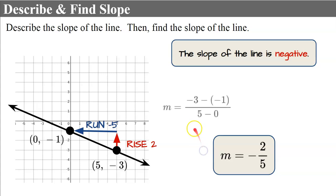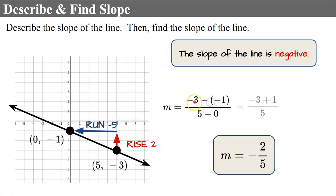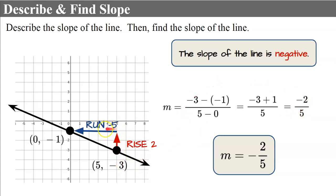We could also find this using the slope formula. We take our y-coordinate negative 3 and subtract negative 1, over our x-coordinate 5 subtract 0. That gives us negative 3 plus 1 over 5, which is negative two over five. So it matches — you can use two ordered pairs and the formula, or if you have a graph, you can do rise over run.